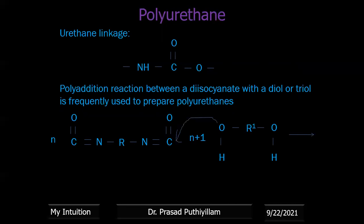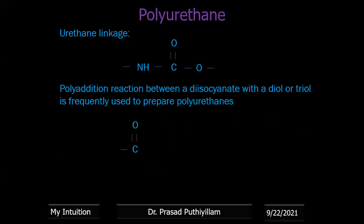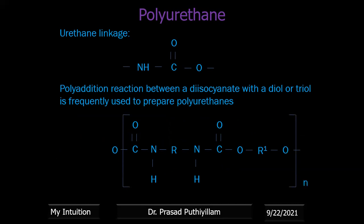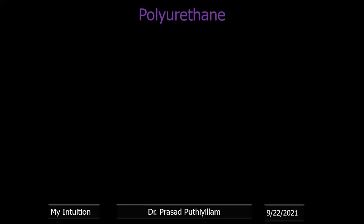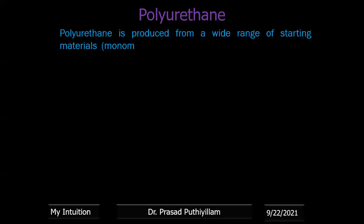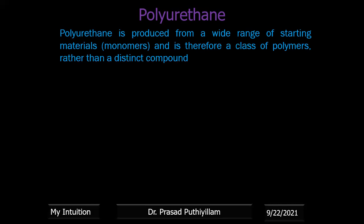In the reaction mechanism, the oxygen lone pair of the alcohol group attacks the carbonyl carbon of the isocyanate, and the nitrogen takes a proton. The reaction happens on either side, giving the repeating unit –C(=O)–NH–R–NH–C(=O)–O–R'–O– repeated N times. Polyurethane is not a single polymer but a group of polymers containing the urethane linkage, and because it is produced from a wide range of starting materials, it has a wide range of properties.